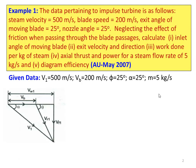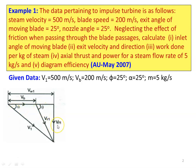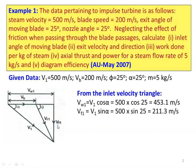Draw the inlet velocity triangle. V1 is the steam velocity with two components: a horizontal component VW1 and vertical component VF1. The blade is moving with velocity VB. The vector sum of VB and V1 gives the relative velocity at angle theta, where theta is the moving blade inlet angle, alpha is the nozzle angle, and VF1 is the flow velocity.